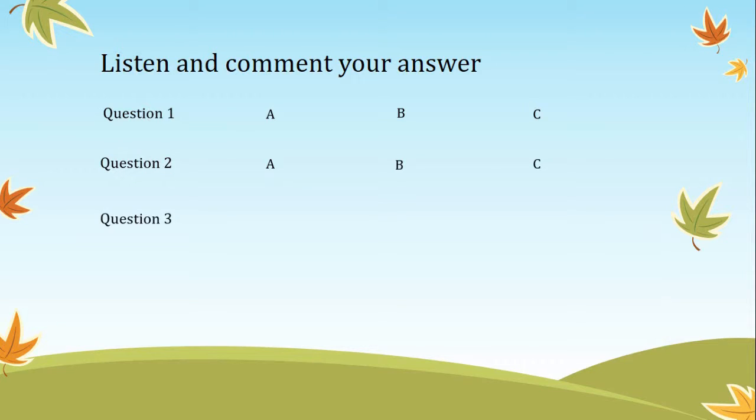Number three: Do you want to eat out tonight? A: We had better cook at home. B: I eat out four times a month. C: I am very hungry.